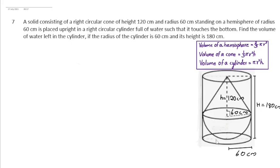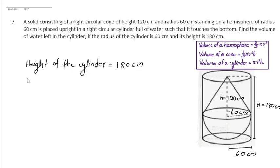The cylinder is full of water and the solid is placed inside the cylinder such that the solid touches the bottom. The height of the cylinder is 180 cm and the height of the conical part of the solid is 120 cm. Here the radii of the cylinder and the conical and hemispherical parts of the solid are the same, which is 60 cm.